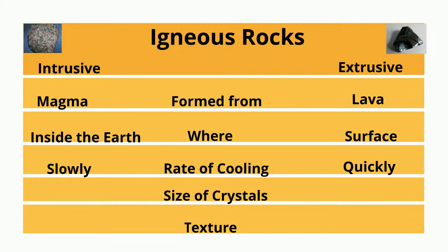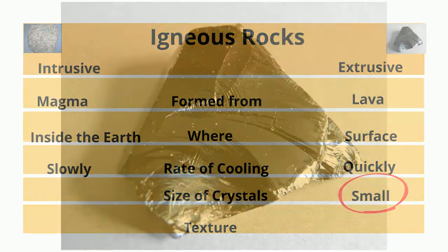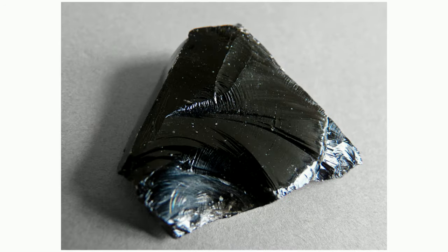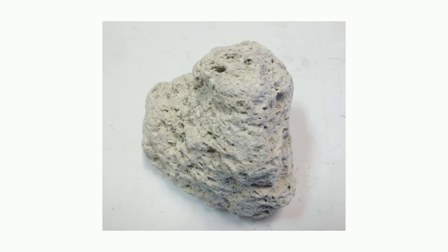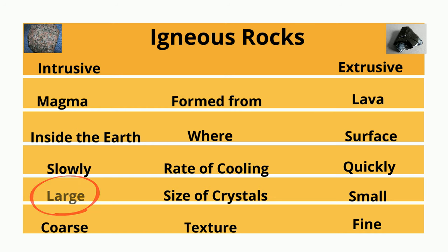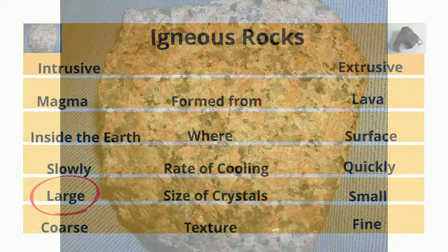Extrusive rocks may have really small crystals — smaller than one millimeter — or no crystals at all. Many times they may be vesicular, which means the rock may have air bubbles. Intrusive rocks have large crystals, which are larger than one millimeter.